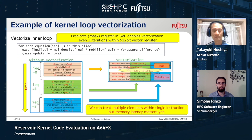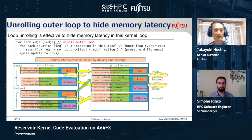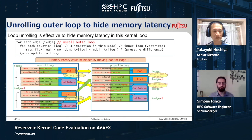This slide shows an example of kernel loop vectorization. The SVE instruction enables treating multiple elements in the loop within a single instruction — up to eight double-precision elements. The predicate register, or mask register, in SVE enables vectorization of this small loop, but we need additional tuning to achieve better performance because memory latency is a bottleneck. We considered unrolling the outer loop, which iterates over edges. As shown in the left figure, each edge iteration has a load-then-calculate cycle. By unrolling the outer loop and moving the load instruction for the next iteration before the previous calculation completes — as shown by the green arrow — we can hide memory latency.